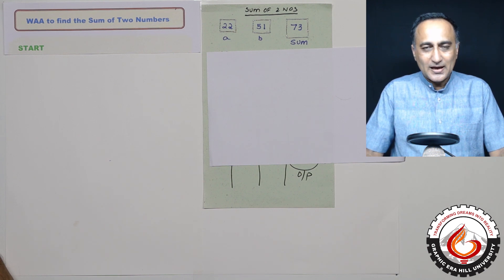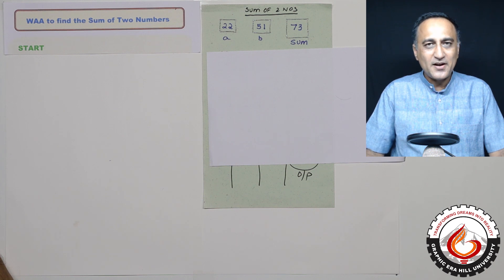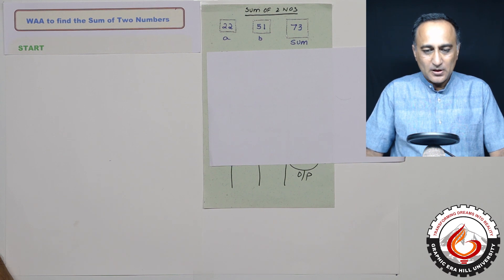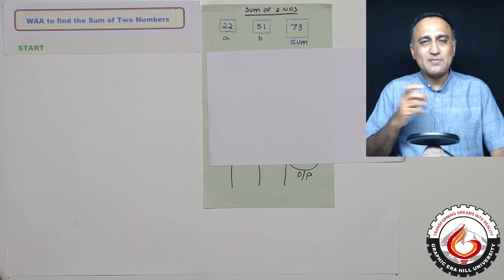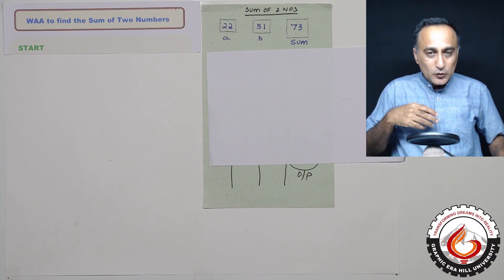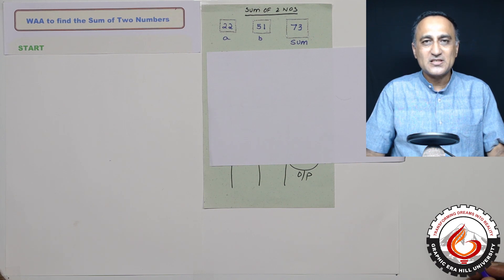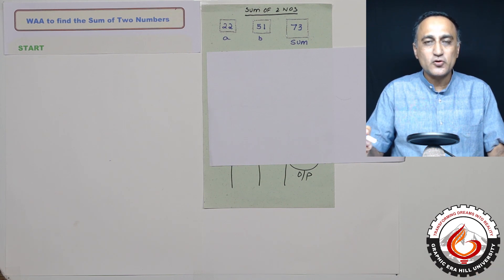This mini lecture is going to show you an example of how to use the algorithmic approach to find the sum of two numbers. If you are going to use the algorithmic approach and convert that into a program in any high level language, you need to follow certain approach or certain steps.